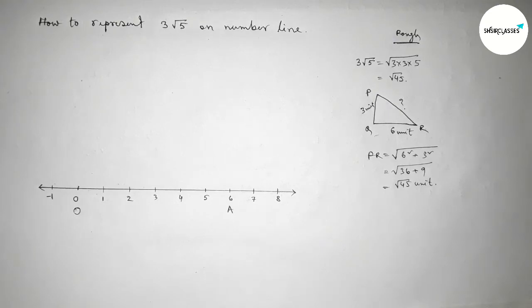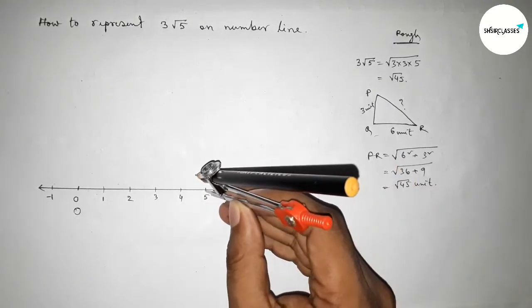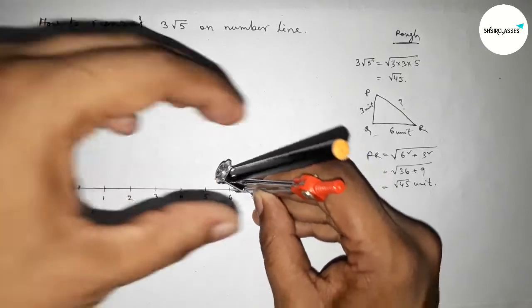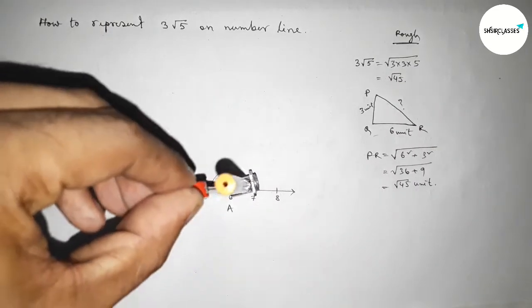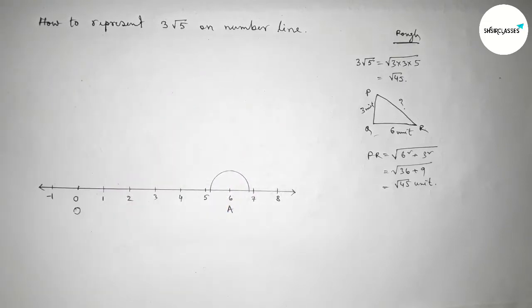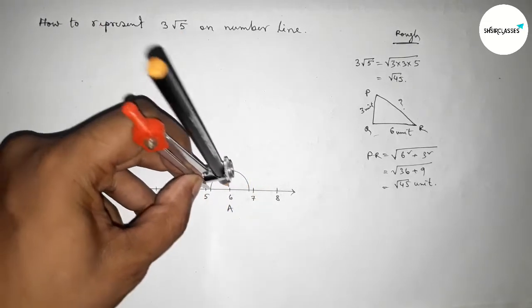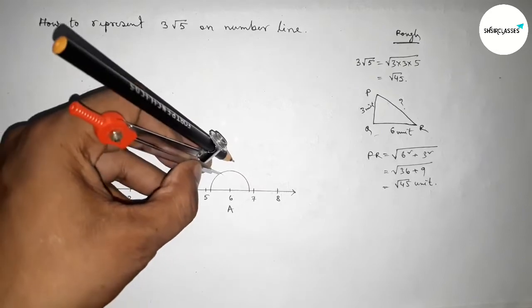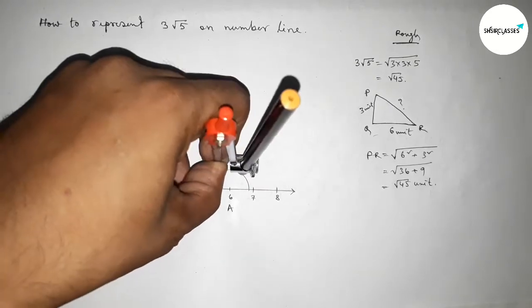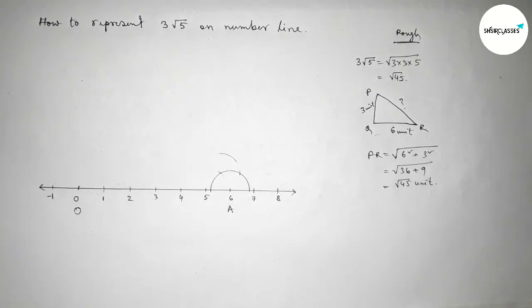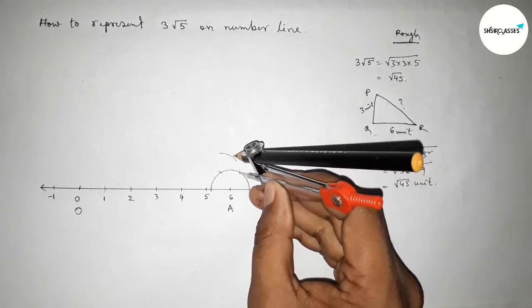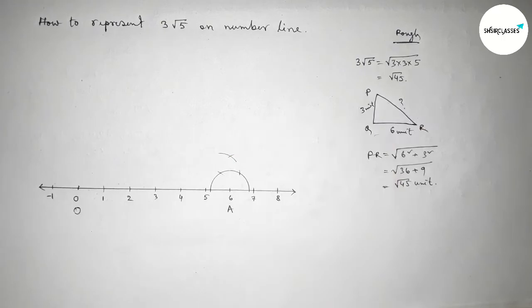Now first we have to draw a 90 degree angle on point A. So taking any length and drawing an arc by this way, and with same length putting the compass here and cut here, with same length putting the compass here and cut here, and drawing an arc here. Again with same length putting the compass here and cut here, so both the curves intersect at a point.